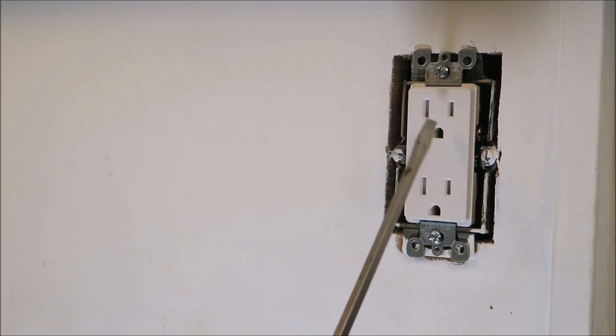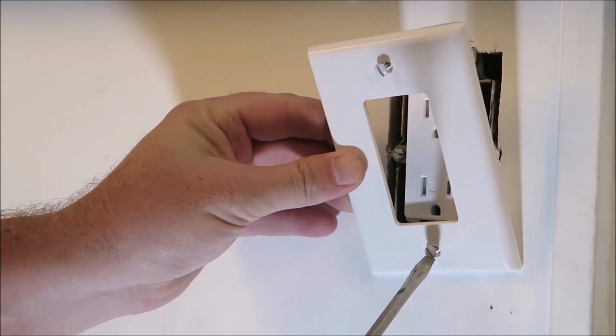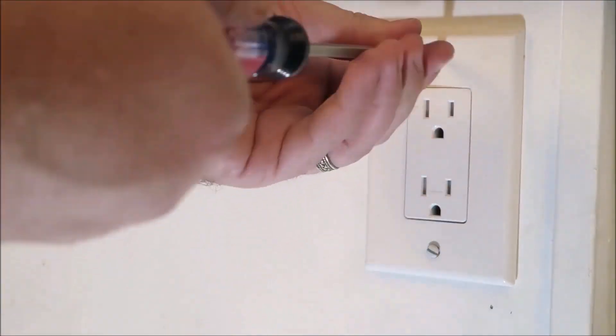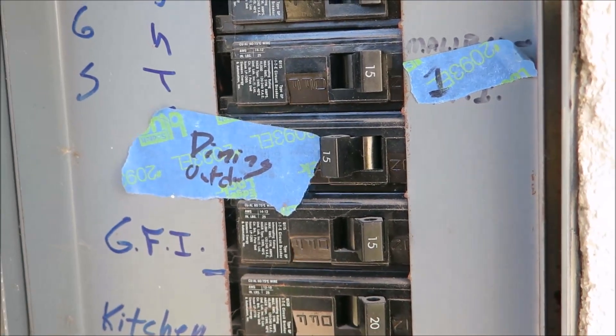So now that we have the new outlet in place, we can go ahead and line this up and attach the new plate on top. With the new plate attached, we can go back outside and turn the power back on.